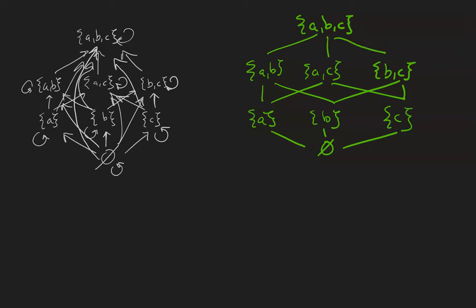And because partial orders are assumed to be reflexive and transitive, all of those other edges are implied by the edges that I've drawn. So this cube looking thing is the Hasse diagram for the inclusion lattice on the power set of ABC.